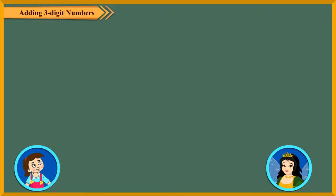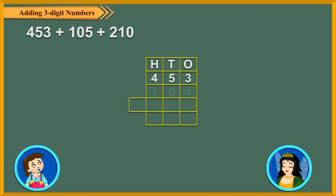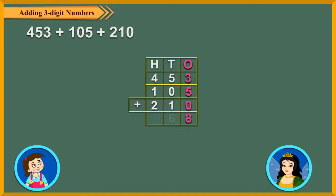So let us add 453, 105 and 210. We first arrange the numbers in columns. Then we add the ones digits. 3 ones plus 5 ones plus 0 ones equal to 8 ones. Then we add the tens digits. 5 tens plus 0 tens plus 1 ten equal to 6 tens.